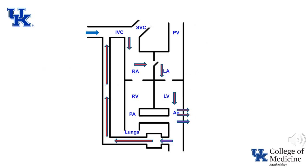From the left atrium, blood enters the left ventricle and is pumped into the aorta. Given the relationship of the ductus arteriosus to the aortic arch vessels, blood from the left ventricle preferentially perfuses the brain via the brachiocephalic and left common carotid arteries. This results in blood perfusing the brain having a higher oxygen content than blood in the descending aorta. Blood flowing through the ductus arteriosus has a lower oxygen content and, depending on the location of the ductus, may contribute to perfusion of the left upper extremity via the left subclavian artery.